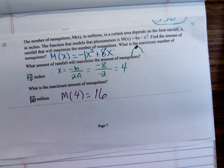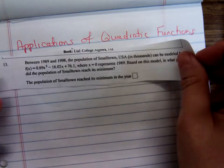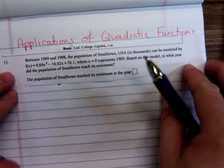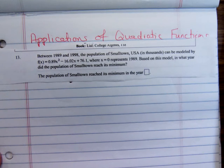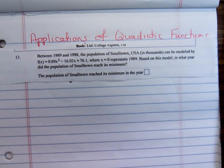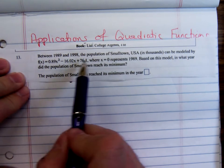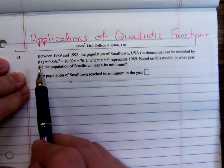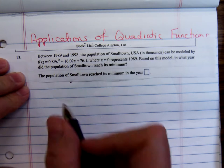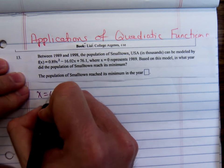Here's another problem, number 13. This one's a little tricky. Between 1989 and 1998, the population of Smalltown USA can be modeled by... You'll definitely want a calculator for doing this.